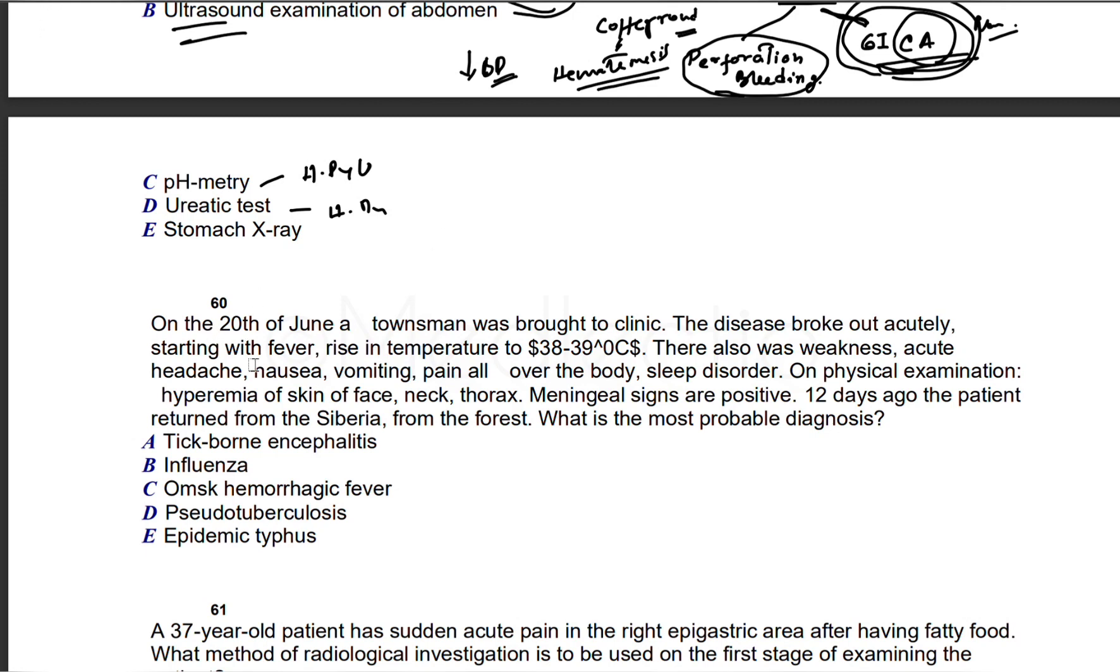On the 20th of June, a townsman was brought to clinic. Disease broke out acutely. Temperature 38-39°C, weakness, acute headache, nausea, vomiting, pain over body, sleep disorder. On physical examination: hyperemia of skin of face, neck, thorax. Meningeal signs are positive. 12 days ago patient returned from Siberia, from the forest. Temperature raised acutely. There is toxic syndrome here and meningeal signs positive.